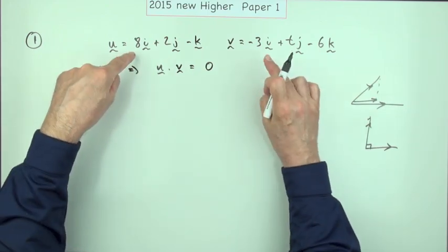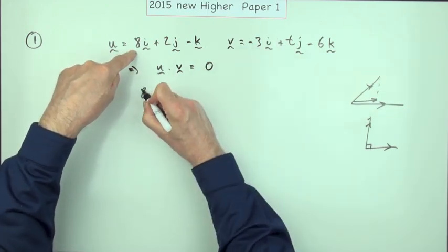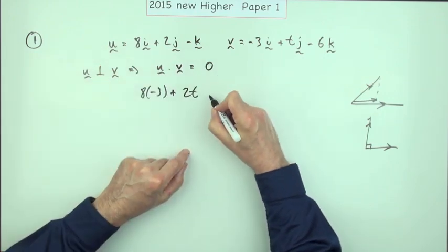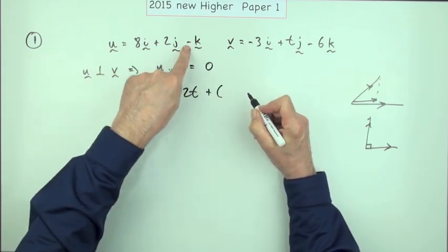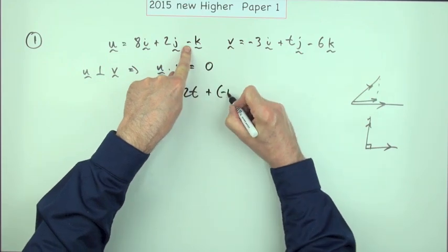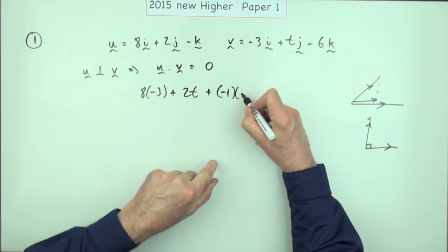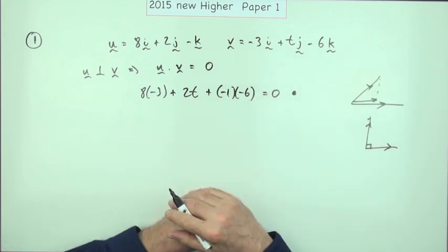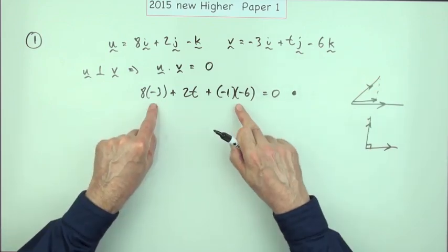So what we've got? U dot V would be 8 times negative 3 (x times the x), plus 2 times t (the y times the y), plus - and that's a negative 1, don't put down negative k - a negative 1 times a negative 6, and that equals zero. And that's the first mark. Well, near enough - it actually has these numbers worked out - but that would be the first mark because it's now just a case of tidying that up.